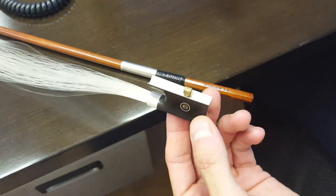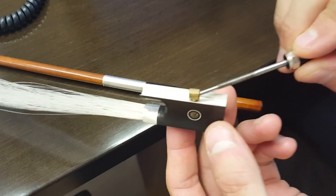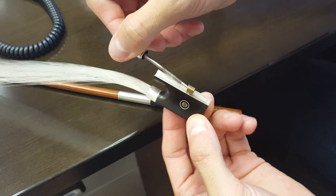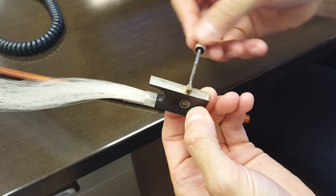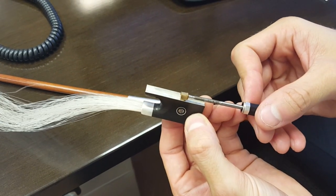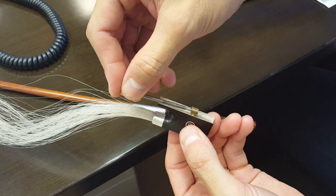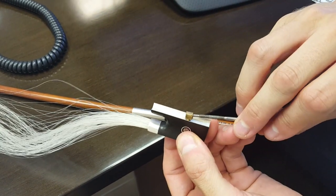Now you can adjust this eyelet screw here half a turn in order to make it tighter. You can go a full turn if it really needs it, but I recommend starting with half a turn. In this case, this bow had the perfect adjustment already, so I'm going to bring it back.